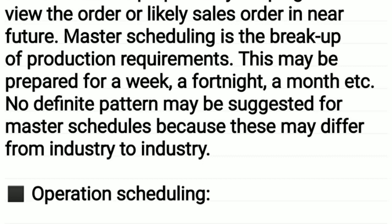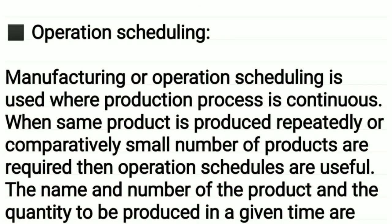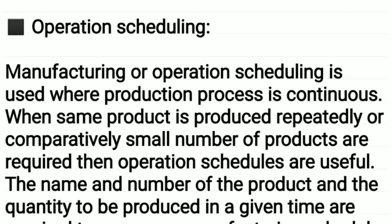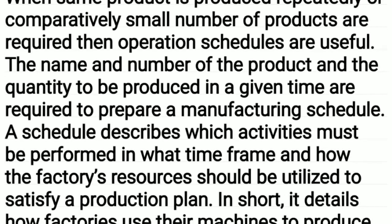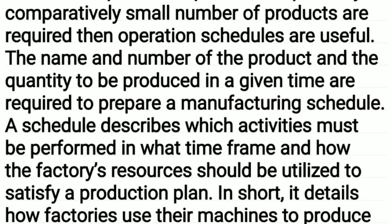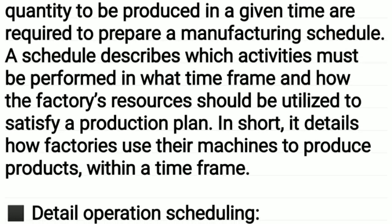Operation scheduling — manufacturing or operation scheduling is used where the production process is continuous, when the same product is produced repeatedly, or a comparatively small number of products are required. Operation schedules are very useful in such cases. The name, number of the product, and the quantity to be produced in a given time are required to prepare a manufacturing schedule.